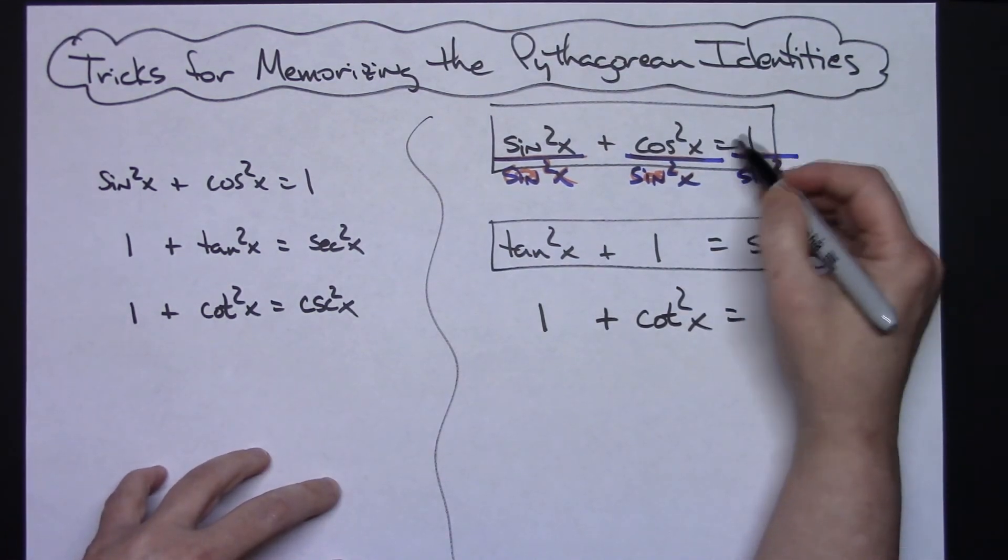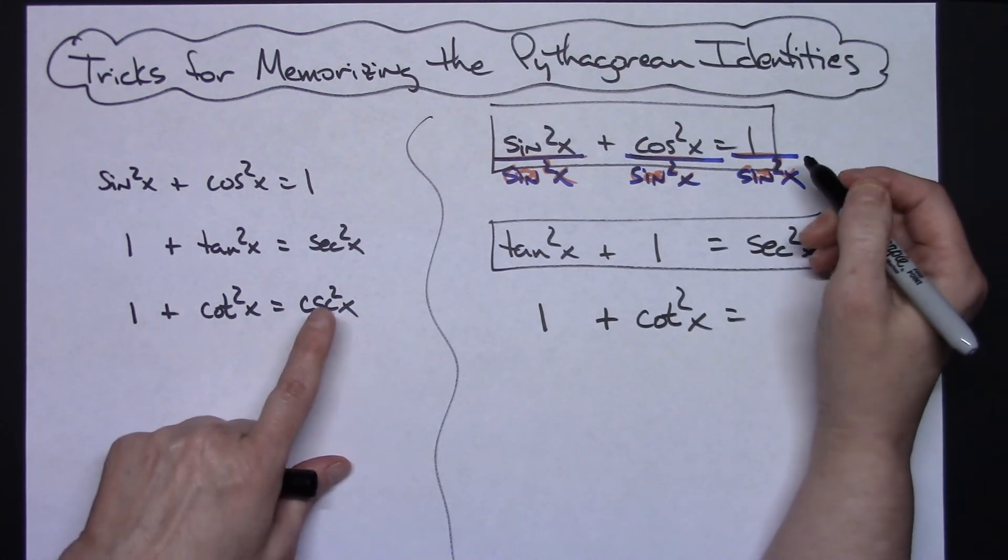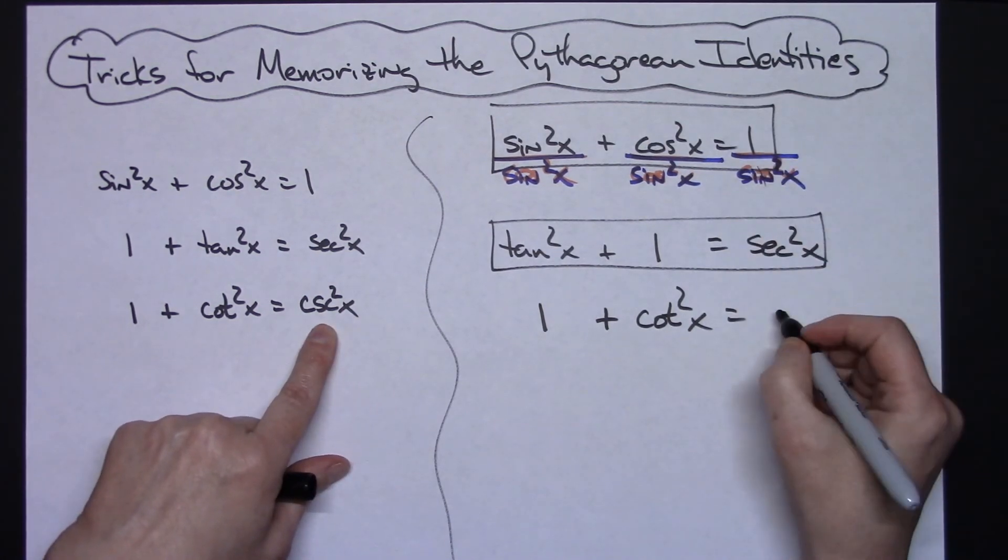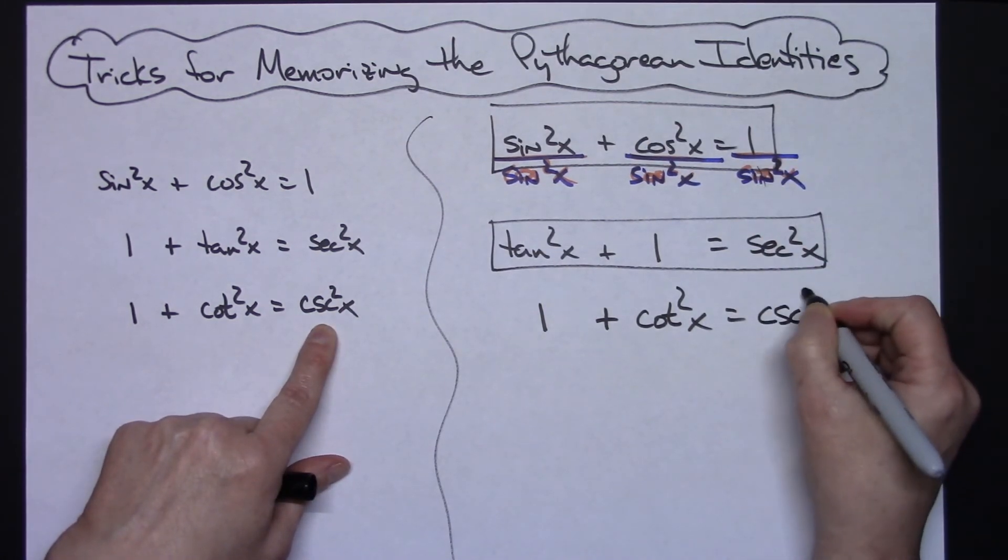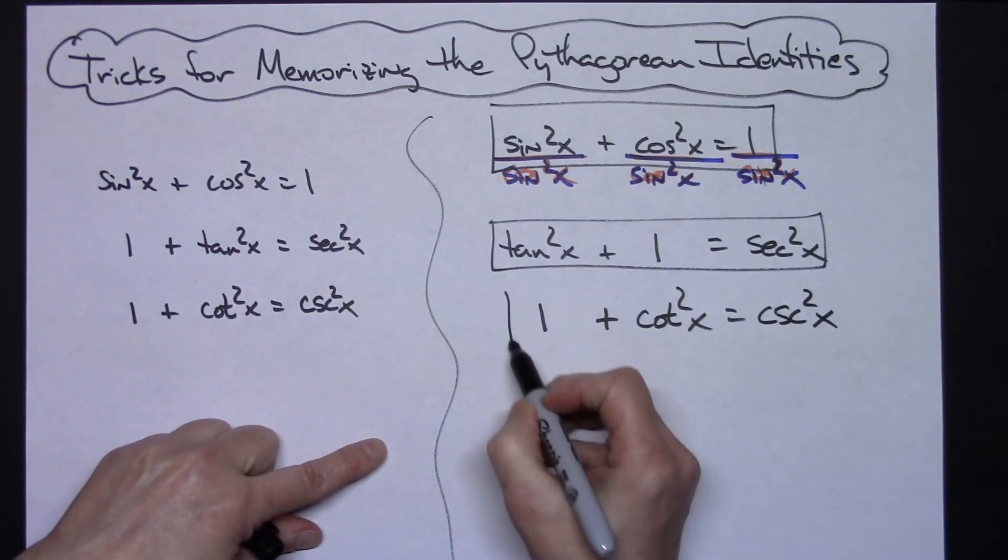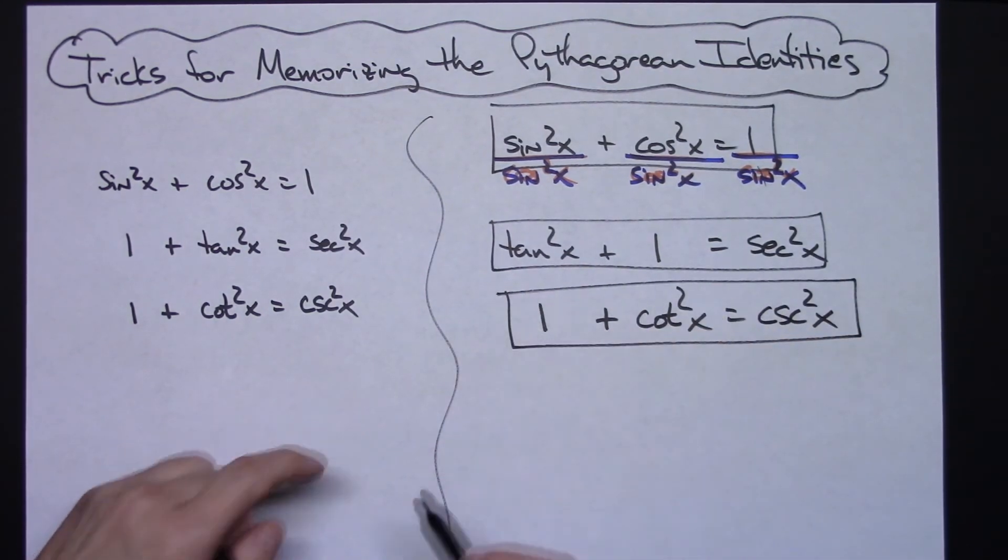And then 1 over sine squared x—again, knowing those reciprocal identities, 1 over sine is cosecant. Okay, so two different methods for memorizing the Pythagorean identities.